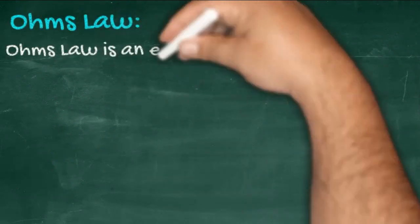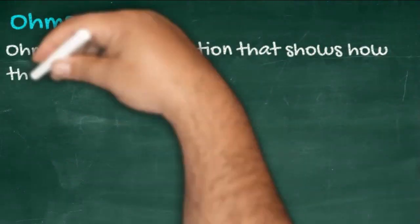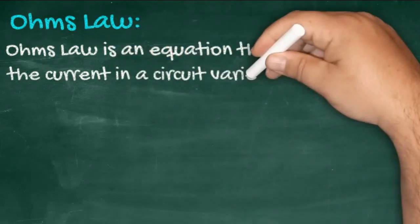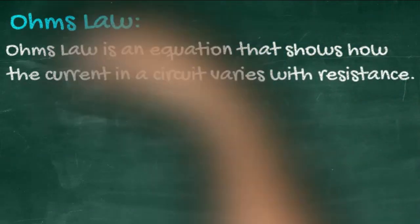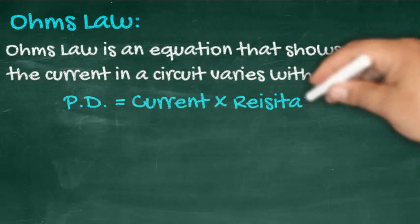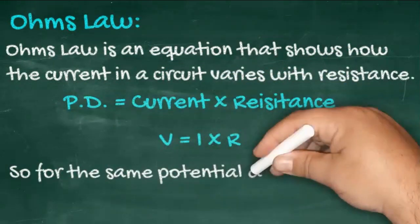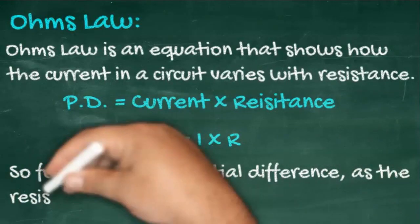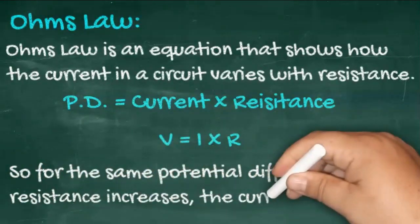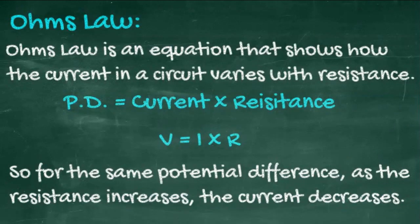Ohm's law shows how the current in a circuit varies with the resistance. It results in an equation which says the potential difference is equal to the current times the resistance, or V equals IR. So for the same potential difference, as the resistance increases, the current will decrease.